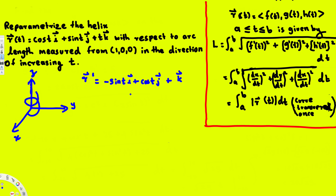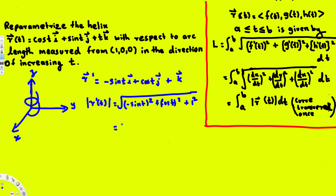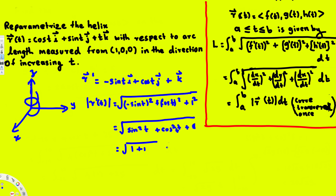Now we've found the derivative. Let's deal with the square root part. The magnitude of r prime of t is the square root of (-sin t)² + (cos t)² + 1². We look for trigonometric identities: sin²t + cos²t equals one, so we have 1 + 1 under the square root.